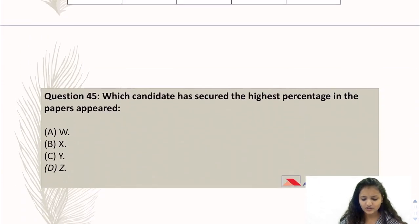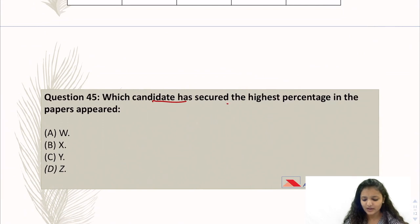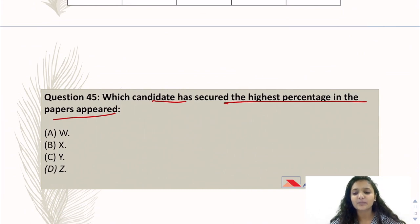Next question is question number 45: which candidate has secured the highest percentage in the papers appeared? In the first question, when we calculated the highest percentage, we divided it by 4 because 4 papers were there. But here is specifically, explicitly mentioned papers appeared. As many papers who have appeared, you calculate the percentage on their basis.